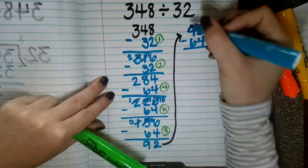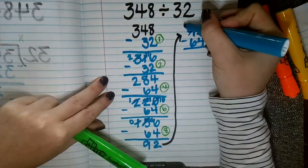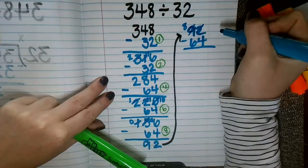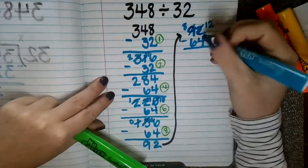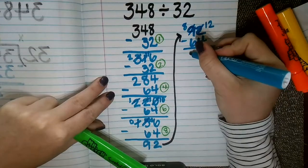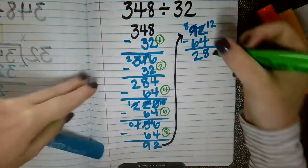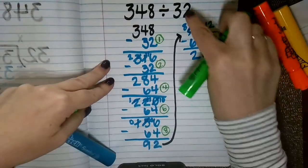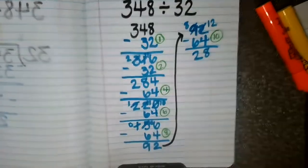2 minus 4 I cannot do, so I'm going to go to my next largest place value, take away a 10 there, making that an 8, and giving that to my ones place, making this a 12. 12 minus 4 is 8. 8 minus 6 is 2. So at this point I have now taken 10 groups of 32 away from my dividend of 348.